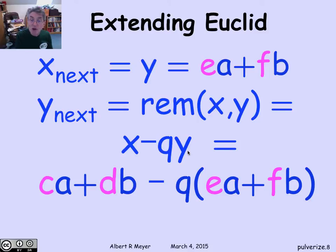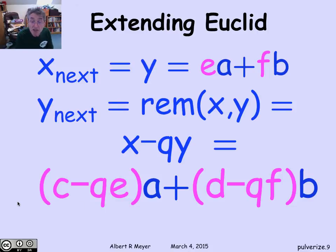Well, the remainder of x and y is just x minus the quotient times y, where the quotient is the quotient of x divided by y. And that means that since I also have x expressed as a linear combination, this x minus qy is simply this linear combination for x minus the quotient number times the linear combination for y. Well, the difference of two linear combinations is a linear combination. So the way to express y next as a linear combination of a and b is just to combine the previous coefficients c, d, e, and f with the quotient in this way.